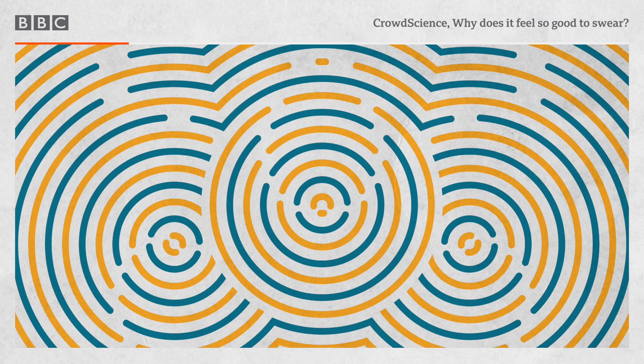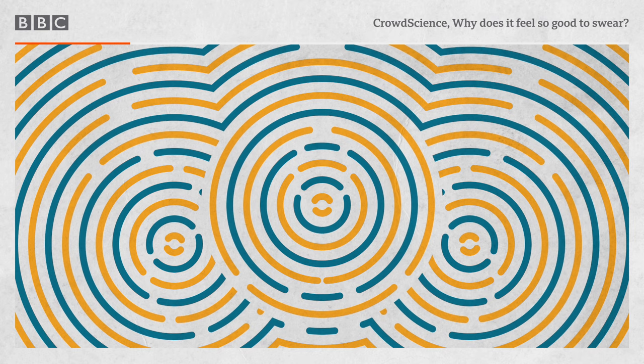I mean, there are clearly special social rules and BBC guidelines. But Emma, what happens in our own heads when we use them? I mean, do we process them differently in the brain?